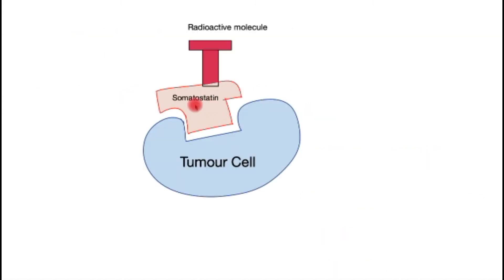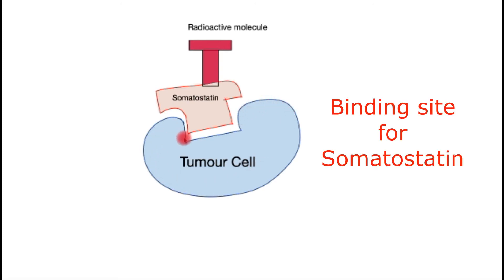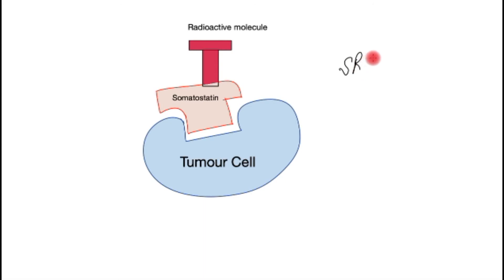Somatostatin is a naturally occurring hormone, and the great majority of neuroendocrine tumors have a receptor for somatostatin. It is this property that is utilized in SRS scans — somatostatin receptor scintigraphy.